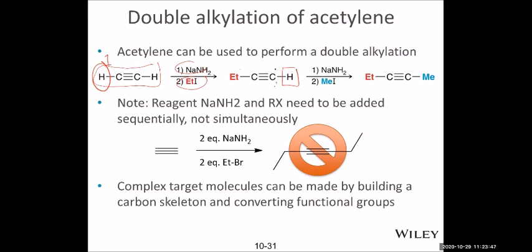As a nucleophile, it attacks methyl iodide — so in the second step we add a methyl group on this carbon. So it's kind of interesting: starting from acetylene, the smallest alkyne, we can add functional groups on both ends through separate step reactions. We call this elongating — making longer carbon chains. The acetylene with a triple bond can be used to build up longer chains.